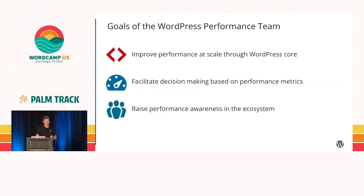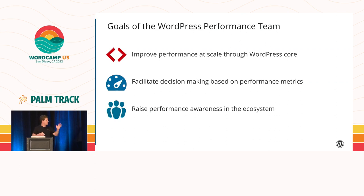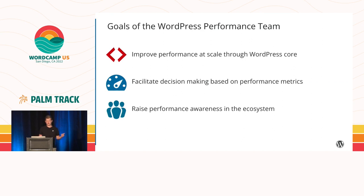The goals of the WordPress performance team can be broken down into three things. First, we want to improve performance at scale through WordPress core enhancements and fixes. While such efforts often take a long time because of backward compatibility and edge cases, anything we can land in WordPress core goes to every WordPress site in the world — those that update at least. We also want to work on tools that make it easier for developers to monitor performance and make decisions based on performance metrics, both for development of core plugins and themes, and for production sites.